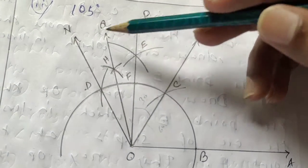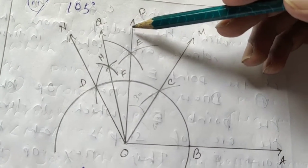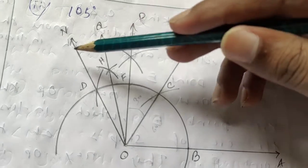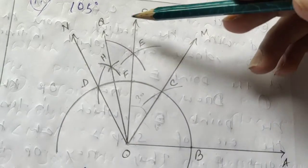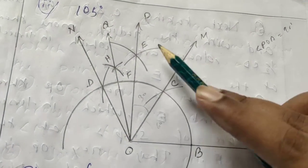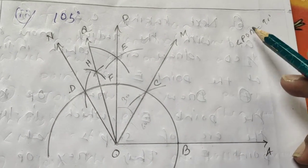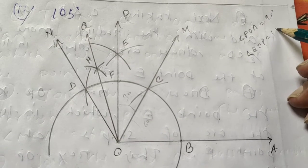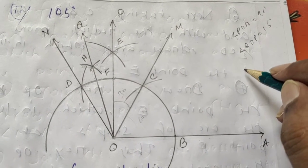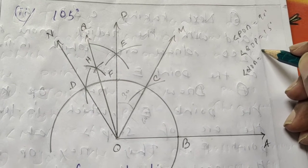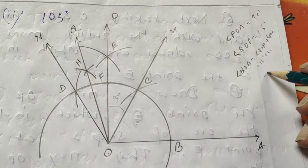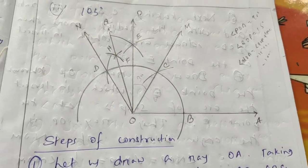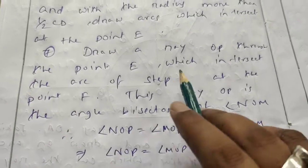Ray OQ is the angle bisector of angle NOP. That means angles NOQ and QOP are equal and both equal to half of angle NOP. Since angle NOP equals 30 degrees, angles NOQ and QOP are both equal to 15 degrees. We already found angle POA is 90 degrees and now angle QOP equals 15 degrees. So angle QOA equals angle QOP plus angle POA, that means 15 degrees plus 90 degrees equals 105 degrees.